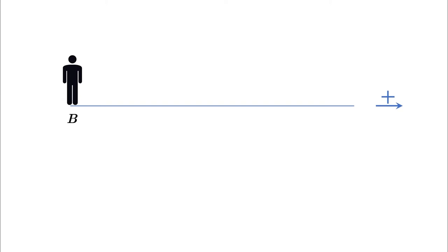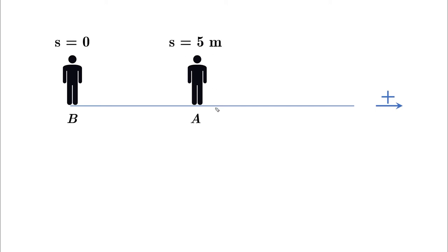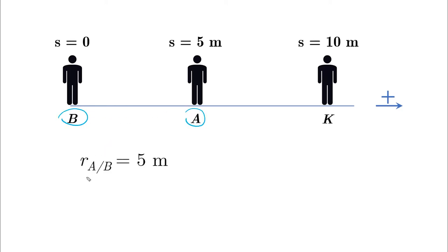Consider a person B standing at the origin with the positive direction to the right, and another person A standing at s equals 5 meters in the positive direction, and another person K standing at s equals 10 meters also in the positive direction. If I ask you what is the relative position of A with respect to B, written as RA slash B, you would probably say 5 meters. And if I ask you what is the position of A with respect to K, you would probably say minus 5.